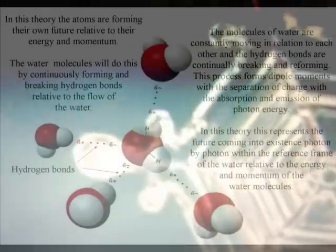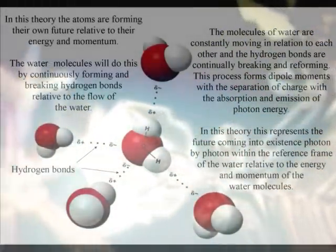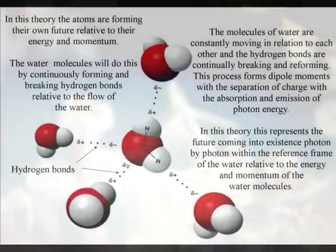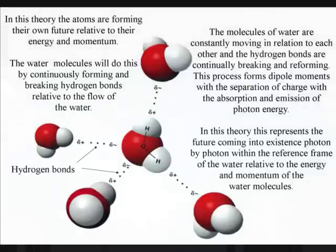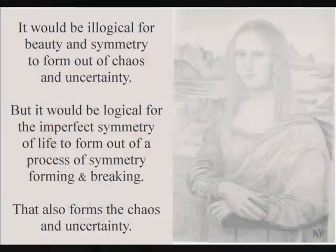The same process of symmetry forming and breaking forms the imperfect symmetries that are visible in nature. We have the chaos and uncertainty of everyday life formed by a geometrical process, and the geometry of this broken symmetry can be seen in our everyday life as the Fibonacci spiral.